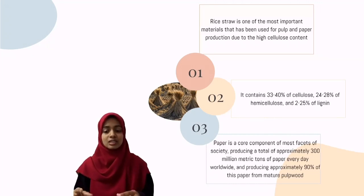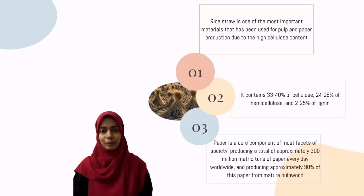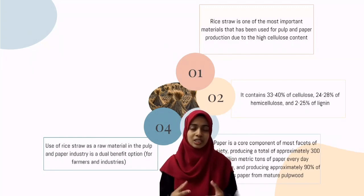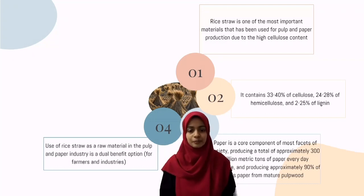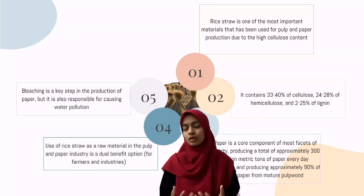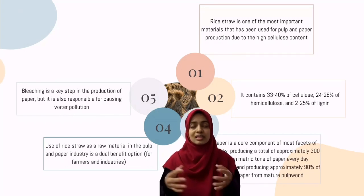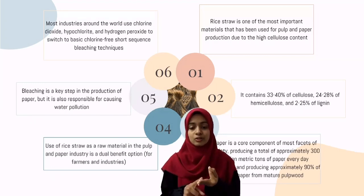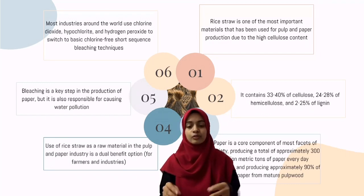Worldwide, 300 million metric tons of paper have been produced every day, and approximately 19% of this paper production comes from mature pulp wood. The use of rice straw as a raw material in pulp and paper production is a dual benefit for farmers and industries. Moreover, bleaching is a key step in the production of paper, but it is also responsible for causing pollution such as water pollution. Most industries around the world use chlorine dioxide, hypochlorite, and hydrogen peroxide, switching to basic chlorine-free short sequences as bleaching techniques.